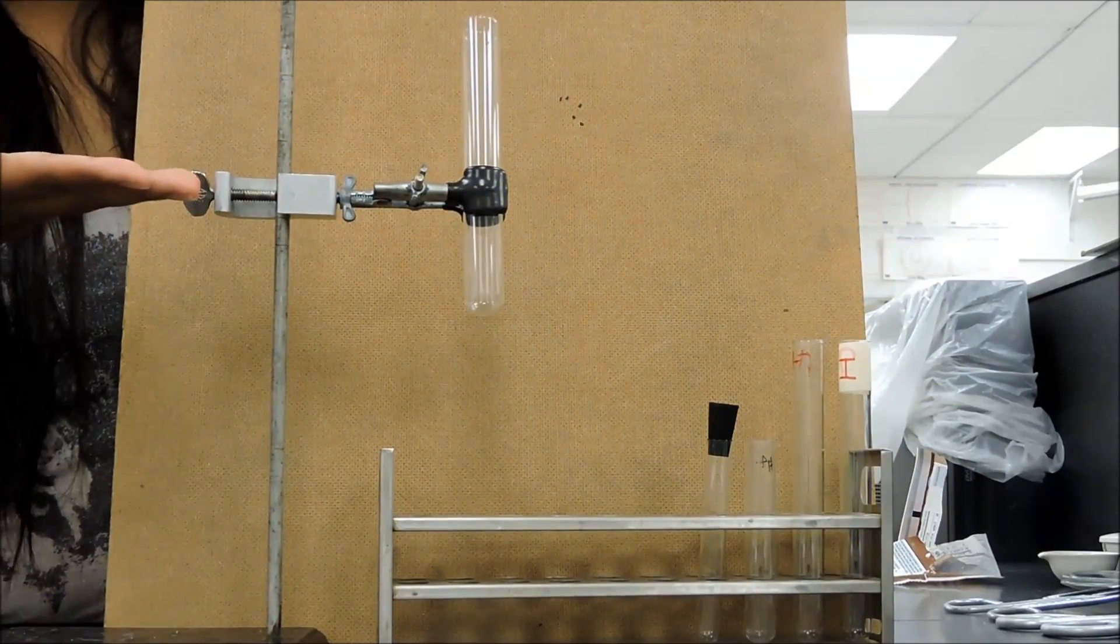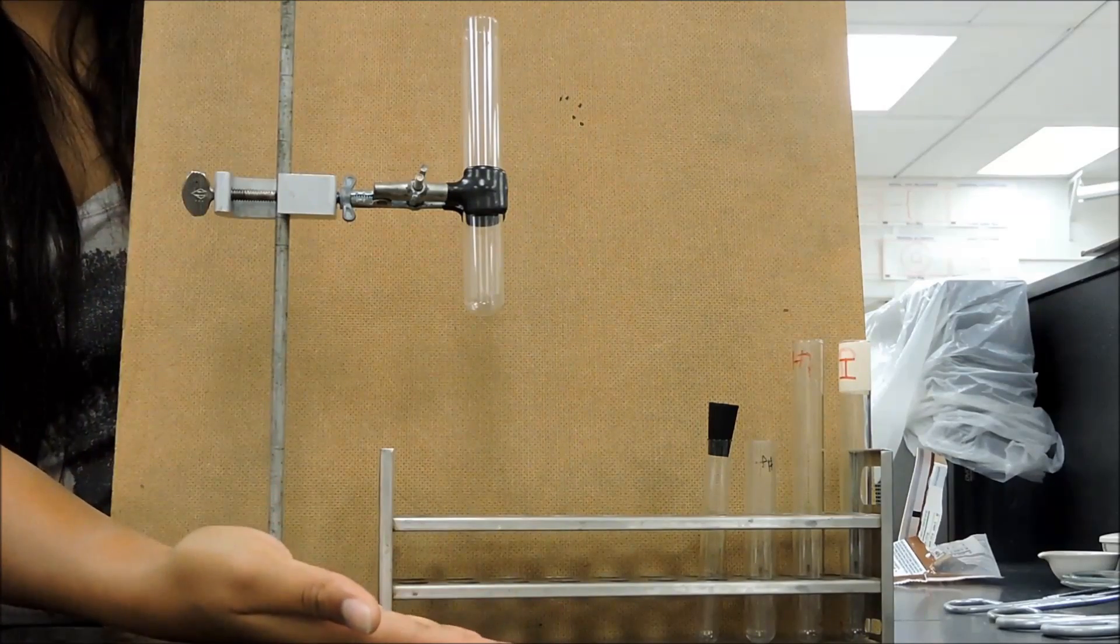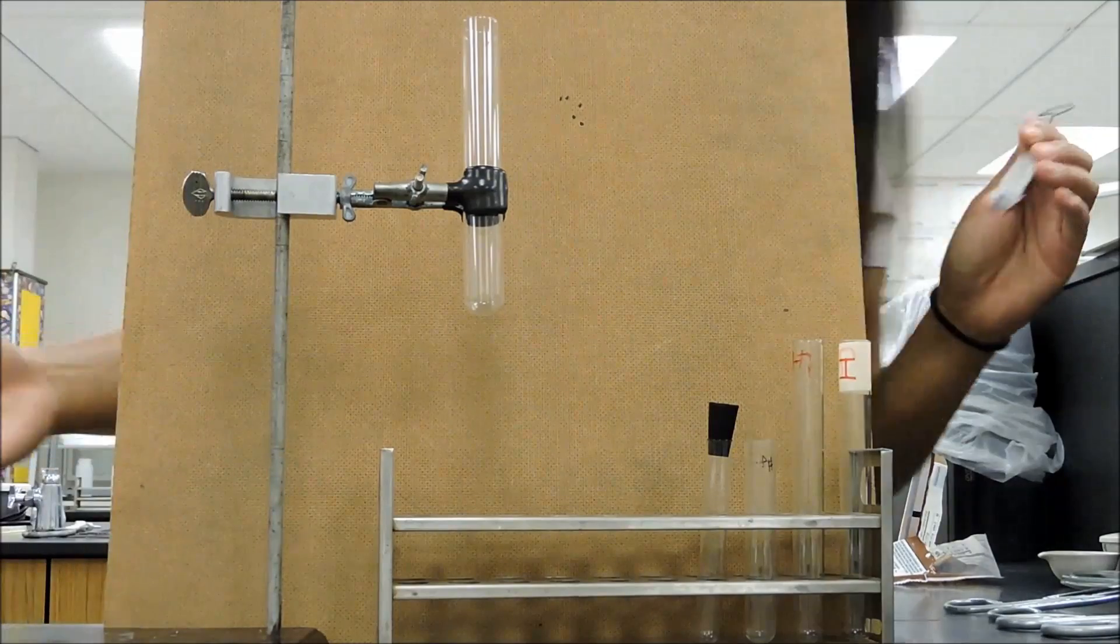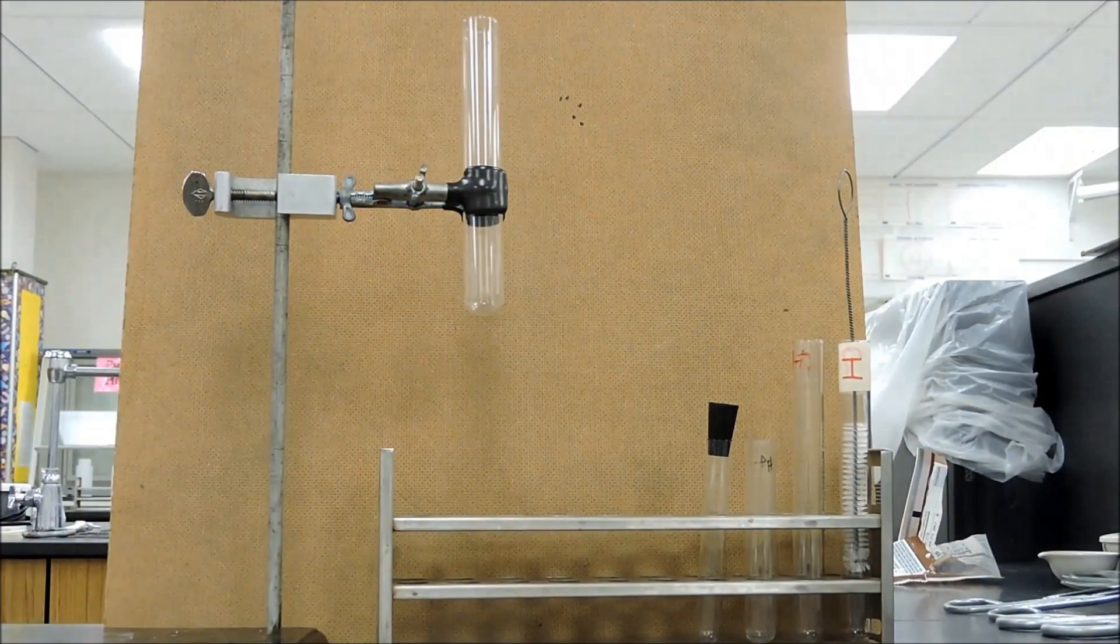The utility clamp is meant to elevate test tubes. Test tube racks hold multiple test tubes at a time. Test tubes hold solutions. The test tube brush is meant to clean the test tube. The cap closes the test tube.